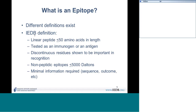A question was raised about whether we distinguish between IgG, IgE, and IgM antibodies. If the author gives that information, we capture it, and occasionally we can also determine it from other sources.